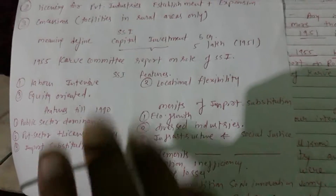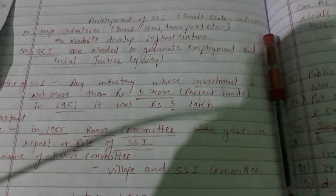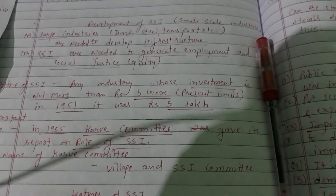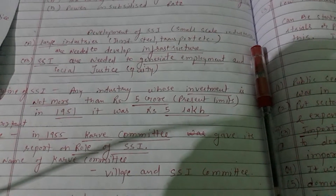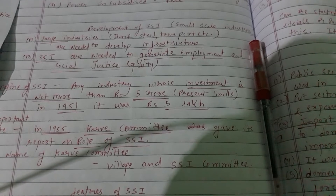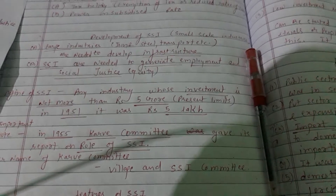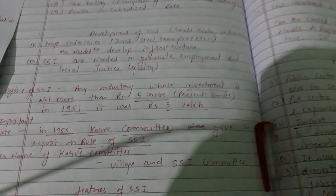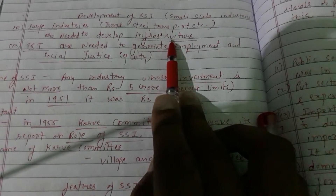If we look at the two major types of industries — large scale industries include iron, steel, transportation, broadcasting, banking, and many others. These types of industries are important for infrastructure development. I have also underlined it: large scale industries are needed for infrastructure development.